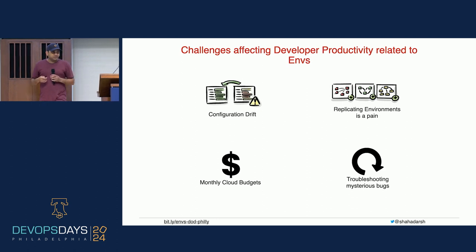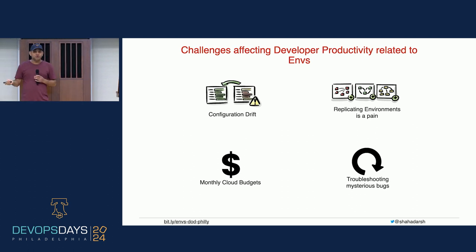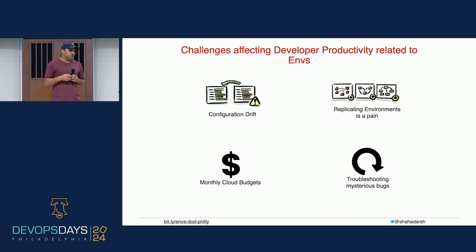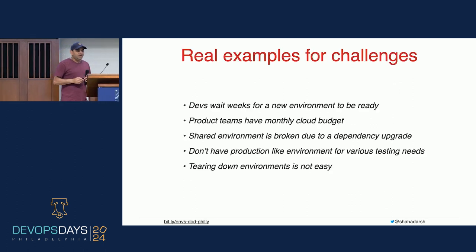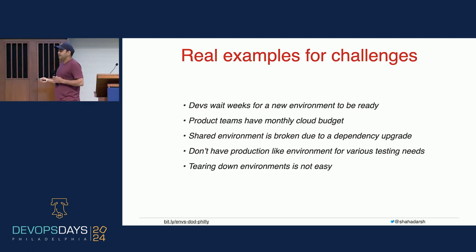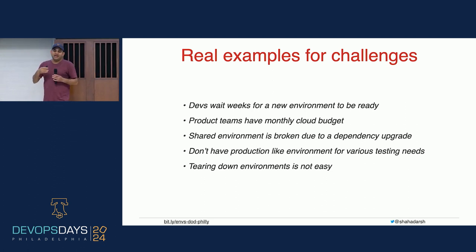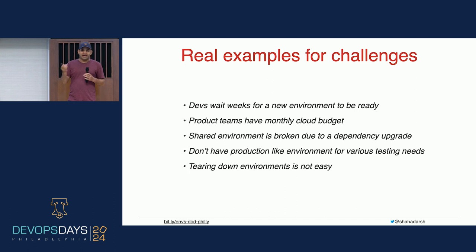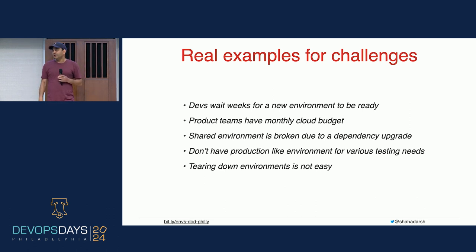I've seen devs spend a lot of time troubleshooting mysterious bugs because they can't easily reproduce them — because the issue is only happening in production, or it's specific to a certain type of data that's only in production. Here are some real examples from my experience. A lot of places I've worked with where devs wait weeks — they have to create a ticket, there's some other team like a platform team or a central team that needs to provision stuff. They don't have fully automated, self-serve systems, so devs wait weeks to get an environment that is fully functional before they can start using it.